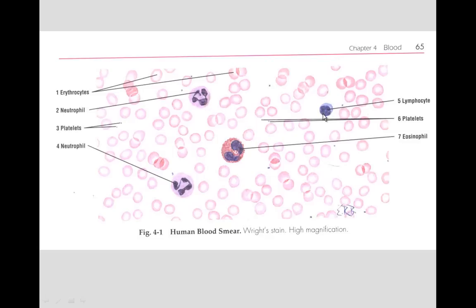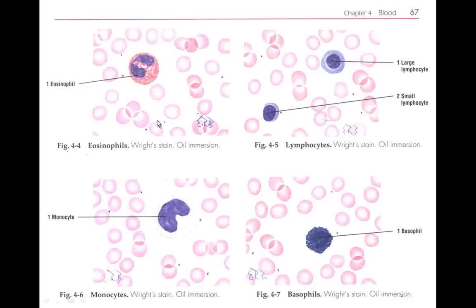Another common cell is a lymphocyte, which looks spherical with a little bit of cytoplasm around it. We also see an eosinophil, which is similar to the neutrophil except that it has eosinophilic granules.